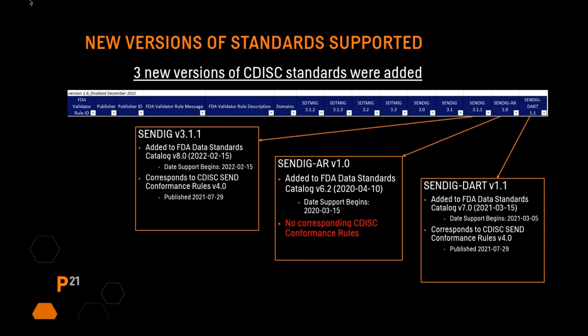The next new standard added is SendIG Animal Rule version 1.0. This was added to the FDA data standards catalog in 2020, and date support begins in 2020. For this standard, there are no corresponding CDISC conformance rules, which does have somewhat of an impact I'll mention shortly. And then SendIG DART version 1.1 is the last standard added. This was added to the FDA data standards catalog in March of 2021, when date support begins, and it corresponds to CDISC SEND conformance rules version 4.0.